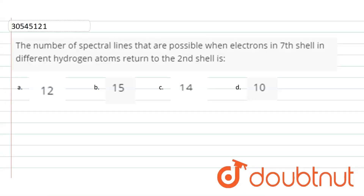The question says that the number of spectral lines that are possible when the electrons in the 7th shell in different hydrogen atoms return to the 2nd shell. So, when the 7th shell jumps to the 2nd shell, we need to find the number of spectral lines that are possible.